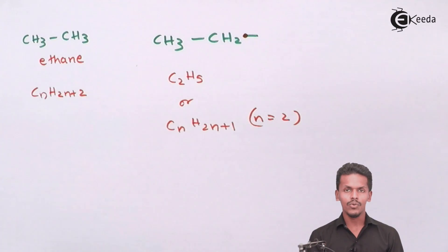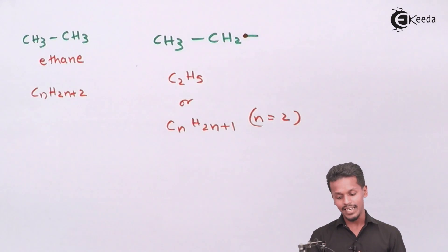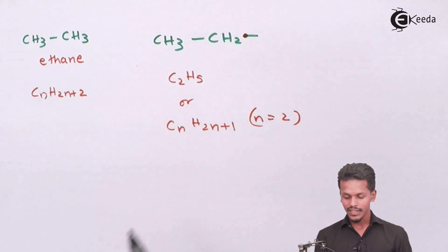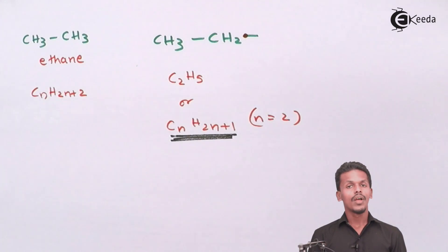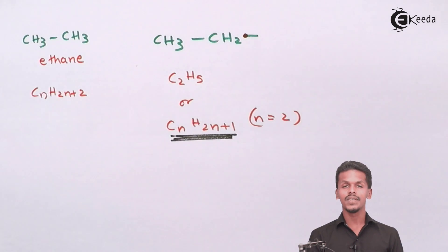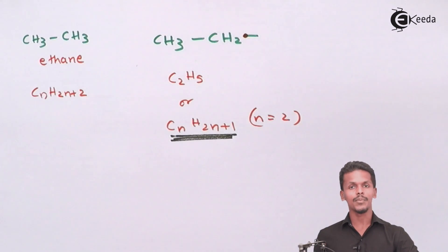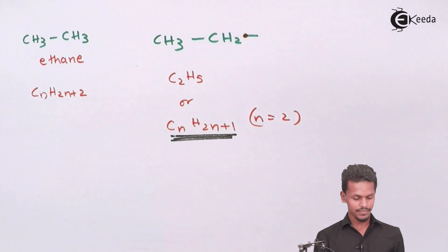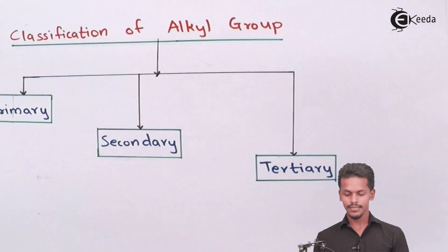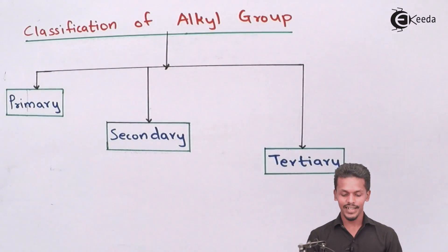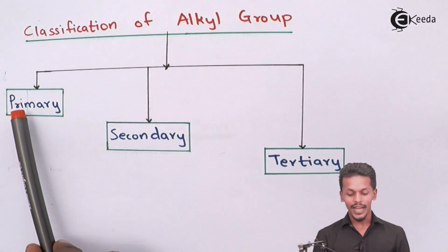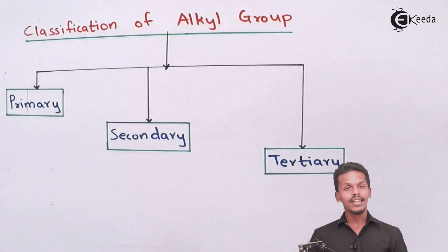Now we are well acquainted with what an alkyl group is and its general formula. When talking about the classification, alkyl groups are divided into 3 types — the same as we saw in the previous lecture for alkanes: primary alkyl group, secondary alkyl group, and tertiary alkyl group.